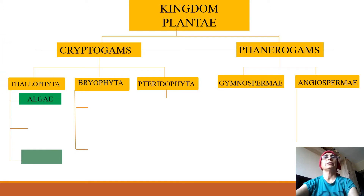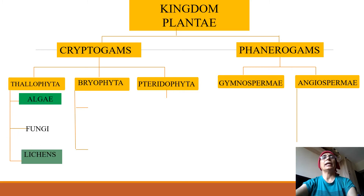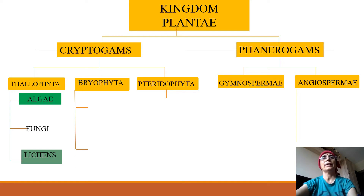Thallophytes are grouped into three groups: algae, fungi, and lichens. Algae are chlorophyllous, pigmented autotrophs. Fungi are heterotrophs — they are achlorophyllous. Lichens are a combination of both: algae and fungi have combined together to give rise to a new thallus called lichens. Lichens are very important as they are pioneers in xerosere and are also indicators of pollution.